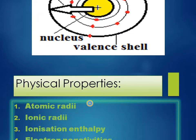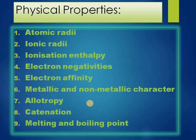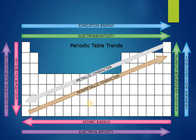Moving to physical properties, there are nine properties I am going to discuss: atomic radii, ionic radii, ionization enthalpy, electronegativity, electron affinity, metallic and non-metallic character, allotropy, catenation, and melting and boiling point. This is the main scenario of how these properties vary moving from left to right and top to bottom in a periodic table.